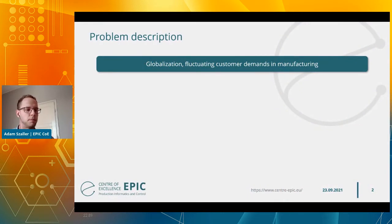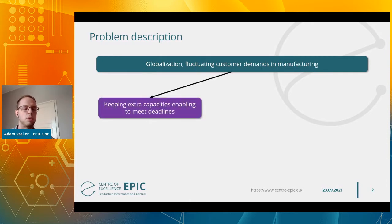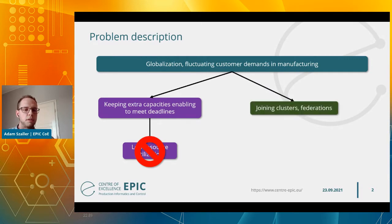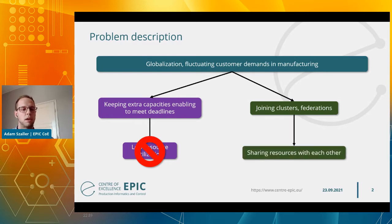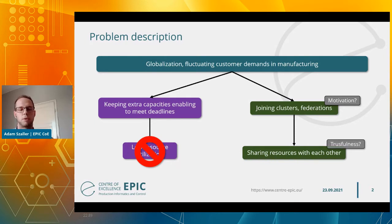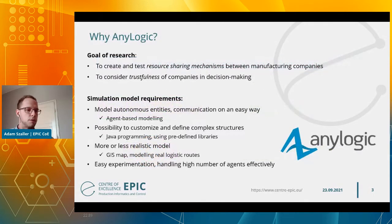Let's talk about the problem description. Globalization and fluctuating customer demands in manufacturing pose serious challenges for companies. To keep deadlines and undertake larger or more urgent orders, companies often keep extra capacities, but this may result in low resource utilization during less busy periods. A more efficient strategy is to join clusters and federations and share resources — requesting resources when short, and offering them when free. However, companies will not join without some advantage, so they must be motivated. The other key issue is trustfulness: to share resources, companies must keep their promises.